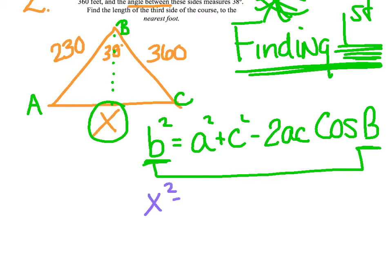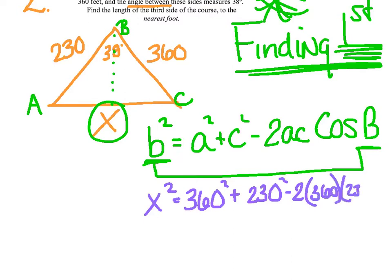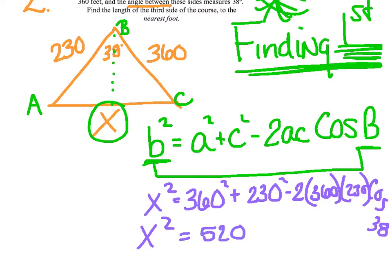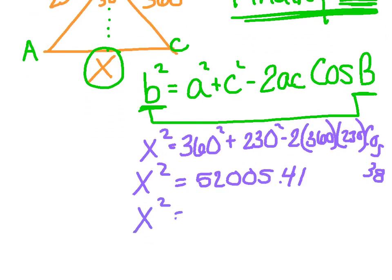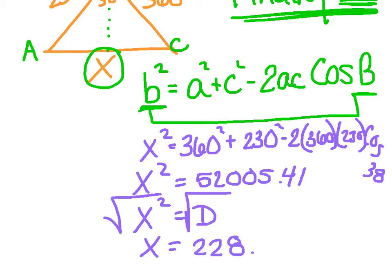I'll call it X squared equals 360 squared plus 230 squared minus two times 360 times 230, cosine of 38. Again, X is already by itself and all of this is a number, so straight to the calculator. I got a pretty large number — 52,005.41. I'm going to store that into D and then take the square root of both sides. The other side equals 228 to the nearest foot.